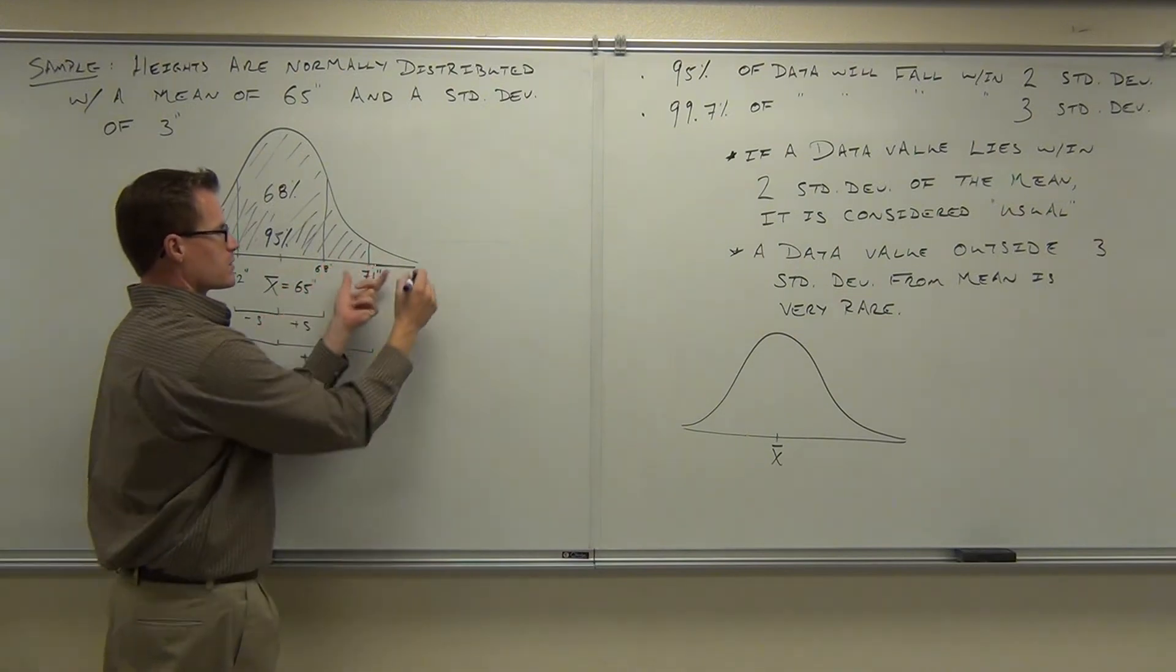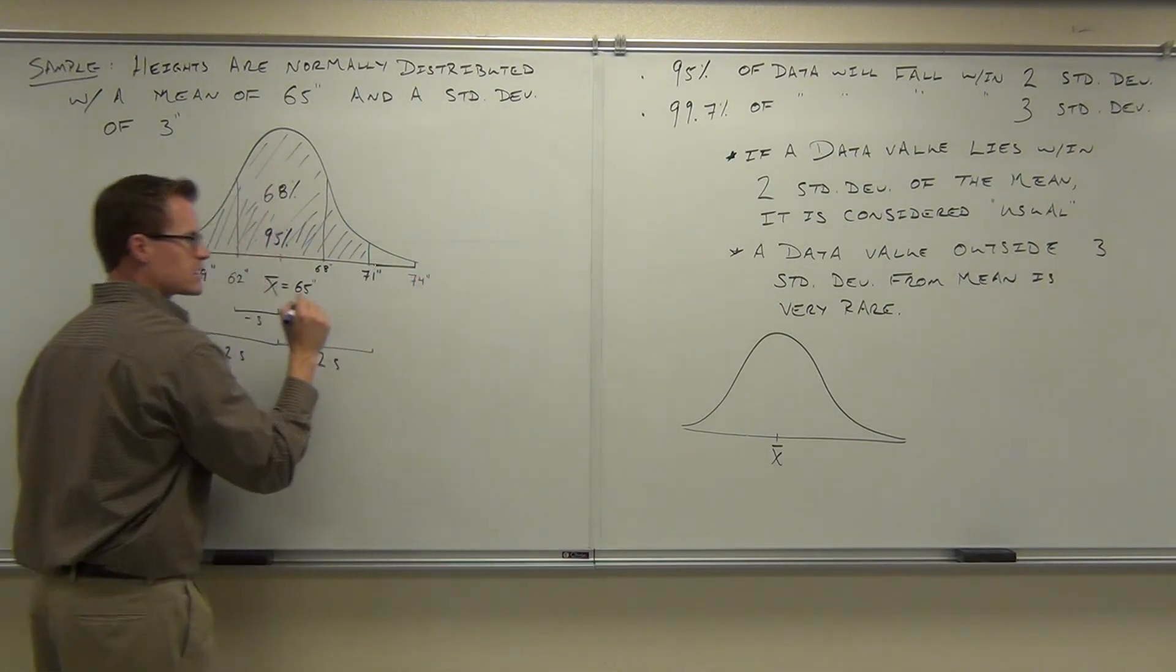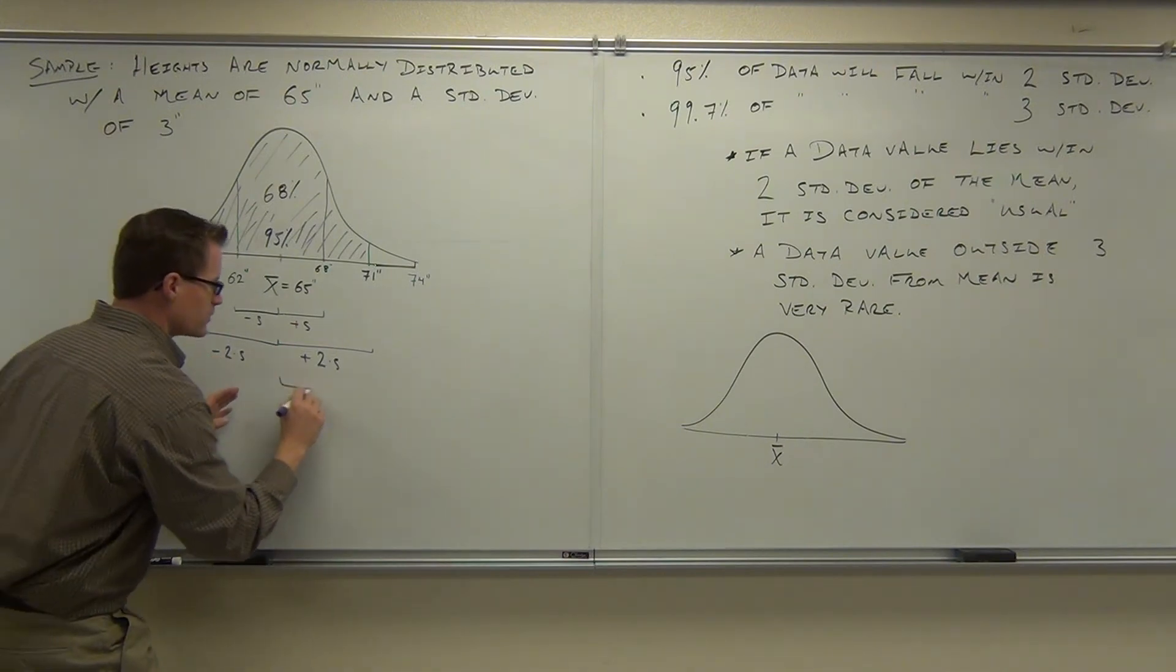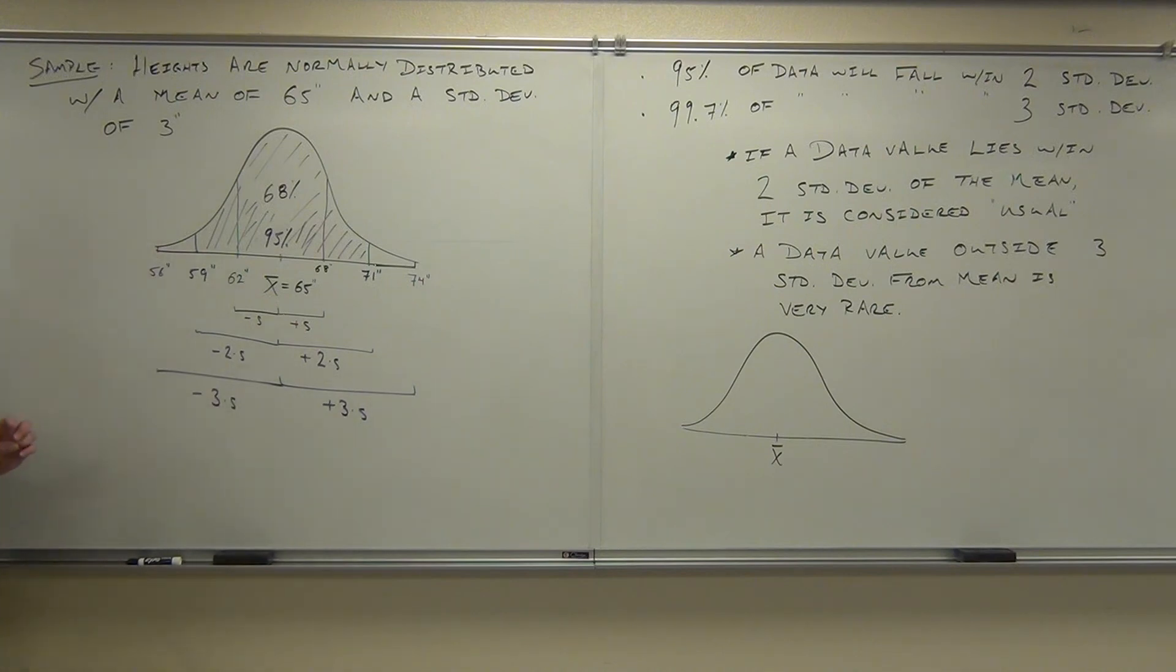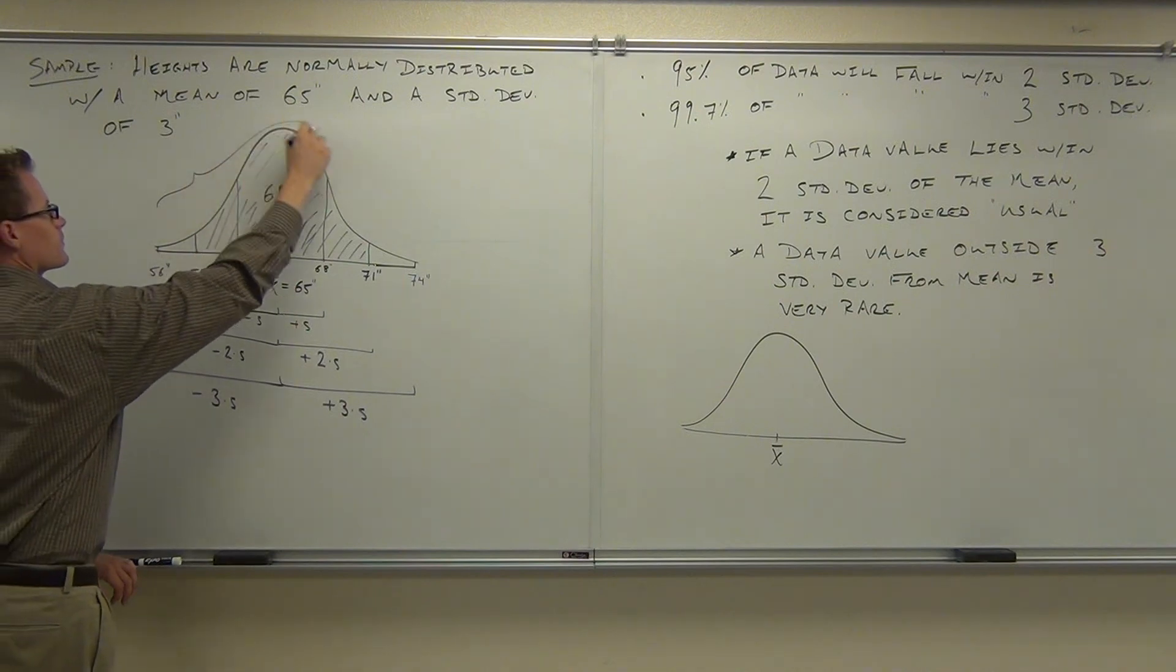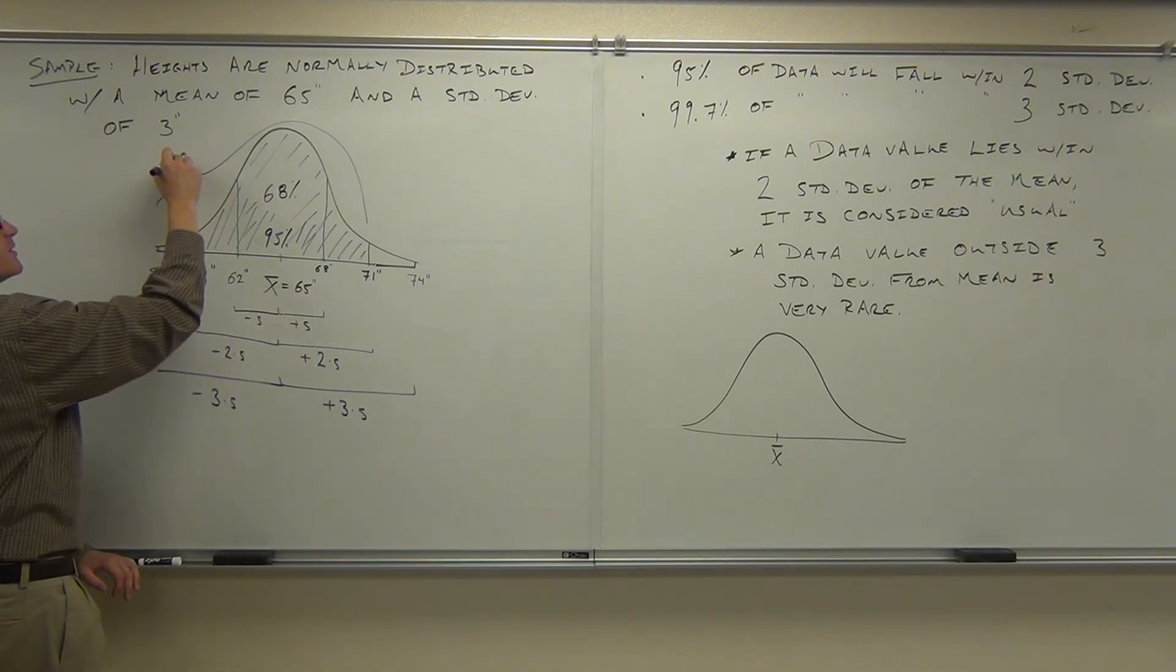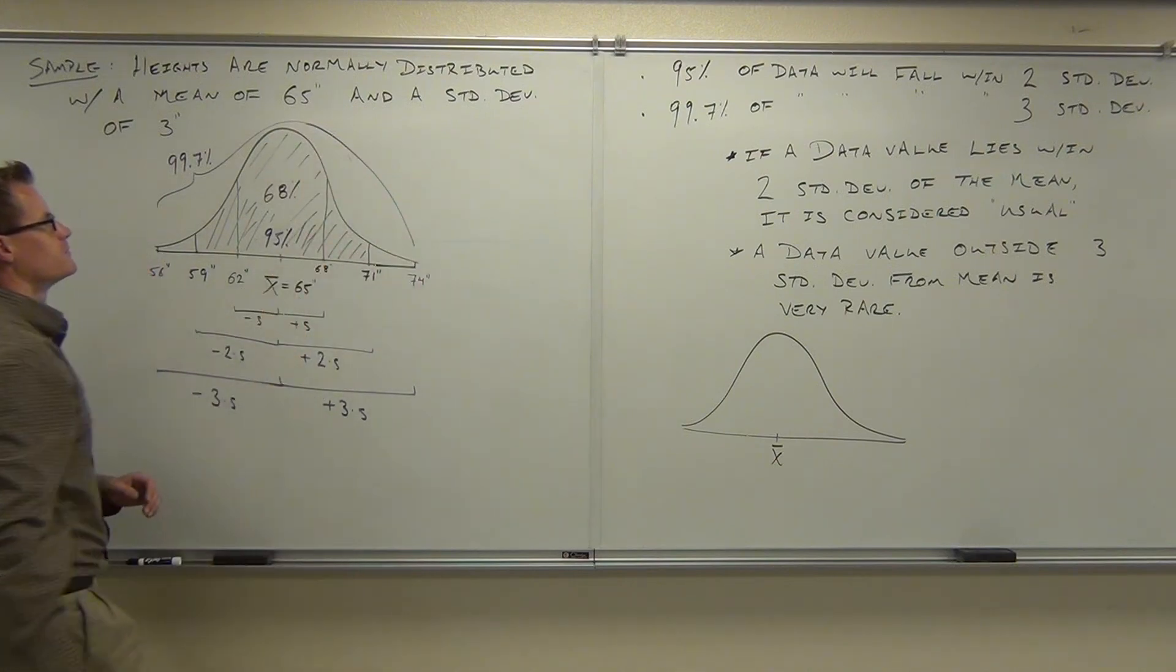If I incorporate another standard deviation, we can do this one together. We're going to go out another unit. What am I going to get at the top end? Seventy-four. And someone else at the low end, what am I going to get? Fifty-six. This would give me 3 standard deviations away. You notice that we could just multiply 3 times S and add it. We could subtract 3 times S. And that's going to give us 3 standard deviations away. Now, what percentage is within 3 standard deviations? 99.7%. I don't want to muck this one up anymore.